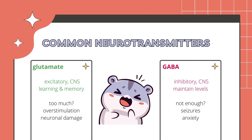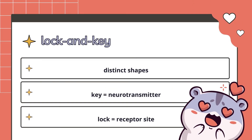Too much glutamate can lead to neuronal damage, and too little GABA can lead to anxiety. Every different type of dendritic spine and neurotransmitter has a chemically distinctive shape, which is why we call the binding of neurotransmitters to dendrites the lock and key process. The neurotransmitter acts like a key which fits perfectly into certain specialised locks — the receptor sites on the dendrites. The neurotransmitter unlocks the receptor site and enables it to fire, meaning neurotransmitters can only affect receptor sites that match their shape.